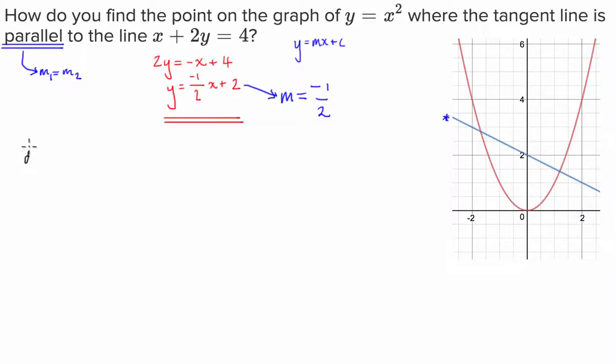So what we're going to do is dy over dx is equal to 2x. I'm assuming that you guys know how to take a derivative. And this is the gradient function. So this tells us what the gradient is on the domain that the parabola exists upon. We know that the gradient function has to equal negative 1 over 2. And then we solve for x.